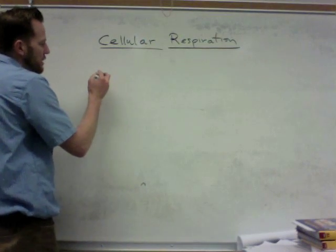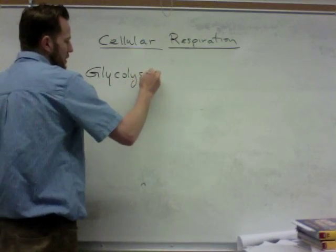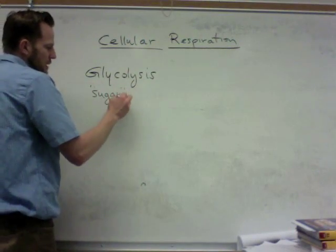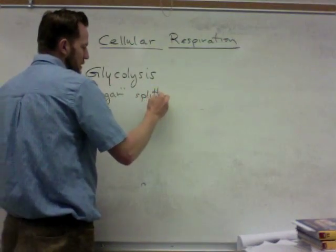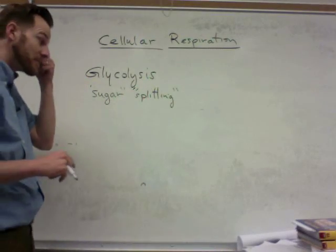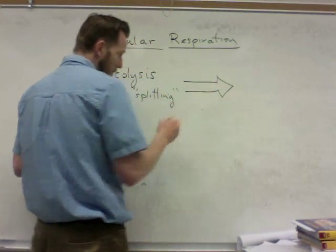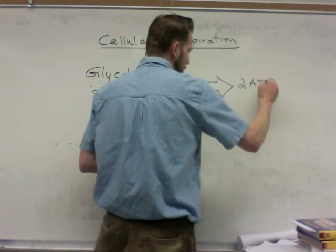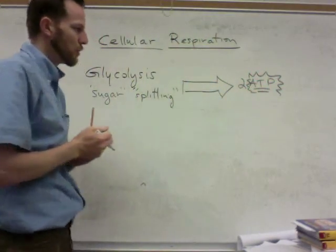Cellular respiration is broken into three different processes. The first is called glycolysis, which basically means sugar splitting — lysis means to cut or to split. Glycolysis generates two ATP, so we're already on our way to making some ATP, but it only makes two of them, which is not a whole lot.